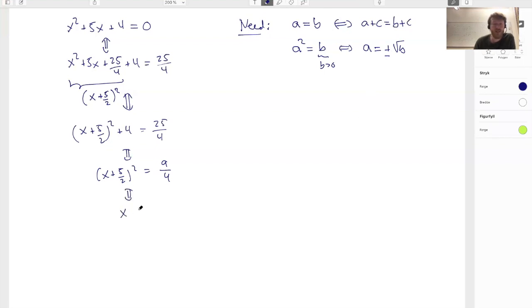So then I write x plus 5 halves is equal to plus minus the square root of this, which is 3 divided by 2. And then I can move 5 halves to the other side. So this is equal to minus 5 halves plus minus 3 halves, which I can write out.